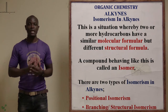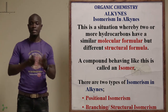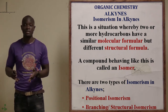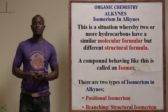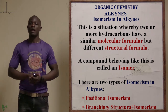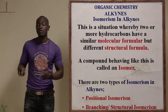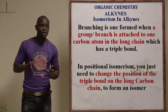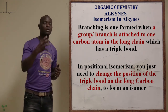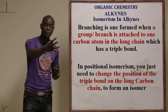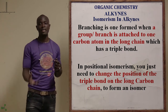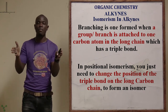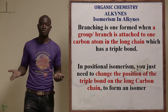Let's now look at isomerism in alkynes. Isomerism in alkynes is exactly the same as in alkenes. We have branching isomerism and we have positional isomerism. For branching isomerism, you take a functional group from one point of the parent branch and place it at another point of the main hydrocarbon. That is branching isomerism.